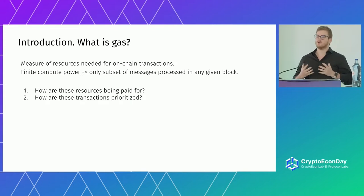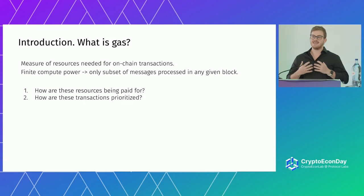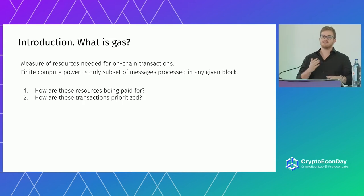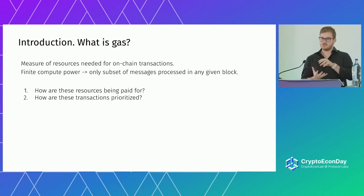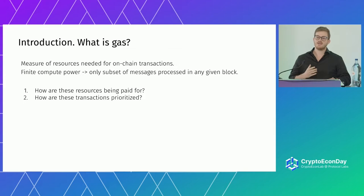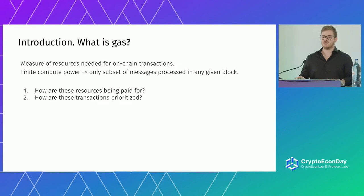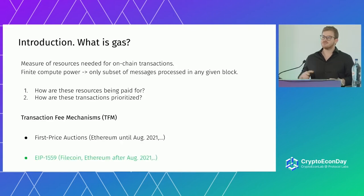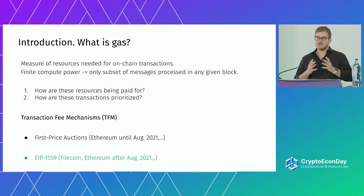Furthermore, computing power is a finite resource, which means that at any given time, of all the messages that users want to include in a block, we can only include a handful of them. Now, this poses two questions: The first one is, how are these resources being paid for? And the second one is, how are these transactions being prioritized — how do we choose which messages go on-chain?